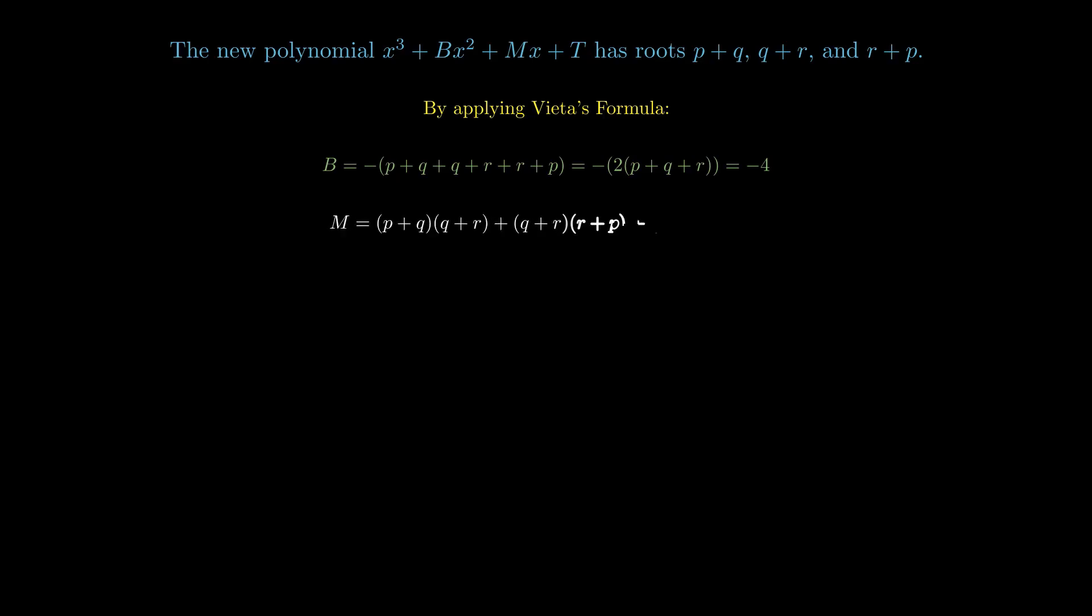Next, we calculate m, the sum of the products of the new roots taken two at a time. This involves expanding the expression p plus q times q plus r plus q plus r times r plus p plus r plus p times p plus q. Simplifying this, we find that m equals 7.